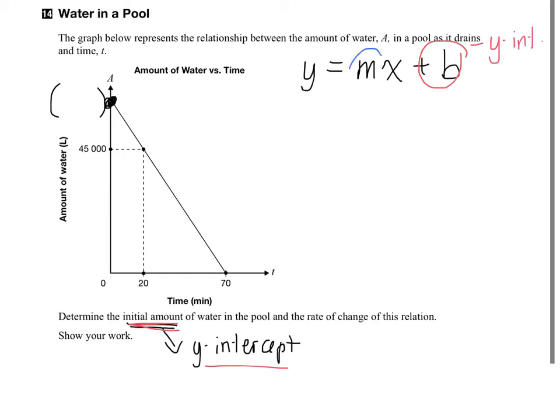What does m represent? This is the slope of the line. Just from the graph, we don't actually, we're not told what the slope is. We can calculate it. But we are given a point, which is x and y, right? Yeah.